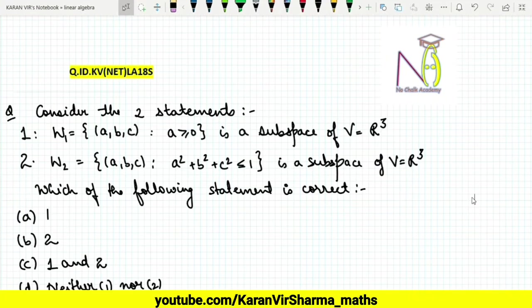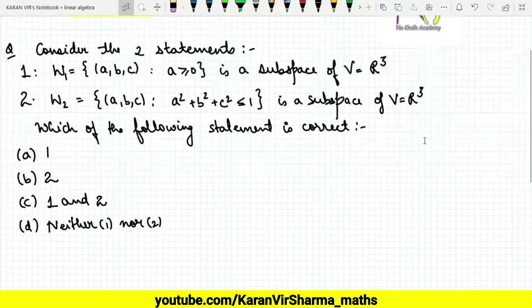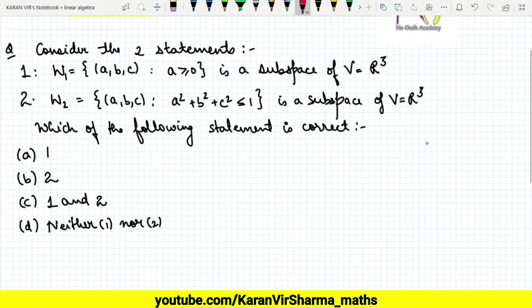Hi friends, welcome to my YouTube channel. This is the 18th question on linear algebra. Consider the two statements: W1 = {(a,b,c) : a > 0} is a subspace of vector space R³, and second is W2 = {(a,b,c) : a² + b² + c² < 1} is a subspace of R³. Which of the following statement is correct?